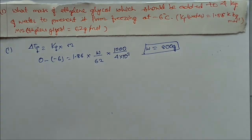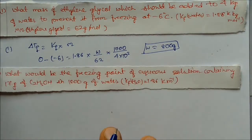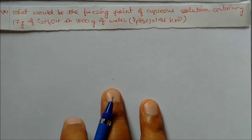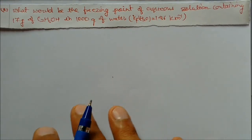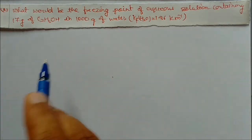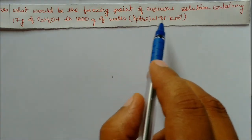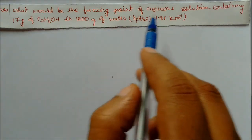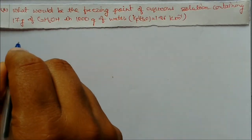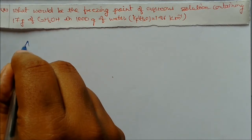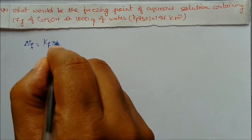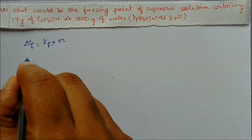This is an easy, formula-based question, but it's very important if you know the formula well. Next question: what would be the freezing point of an aqueous solution containing 17 grams of ethanol in 1000 grams of water? Kf is given. We have to find the freezing point. Again, same formula: delta Tf = Kf × molality.